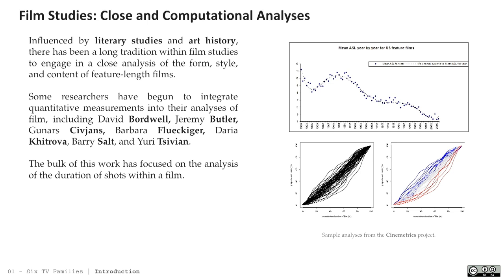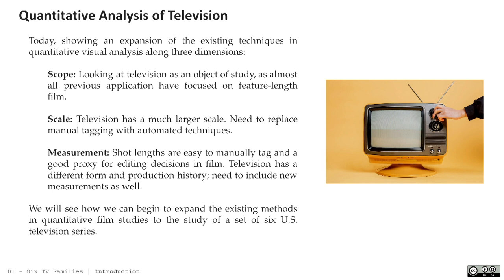We're interested in expanding these quantitative analyses to TV, both for its scope and scale, and to think about style, form, and representation over time. A show like Bewitched or I Love Lucy has around 30 episodes per season, each about 28 minutes, over 10 years. To do image analysis or computer vision work on it, you have to cut at the frame rate — so you're not talking about 100,000 images, you're talking about millions of images building up very, very quickly to analyze one series.